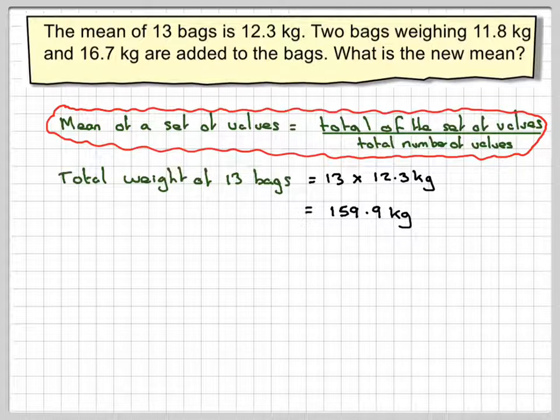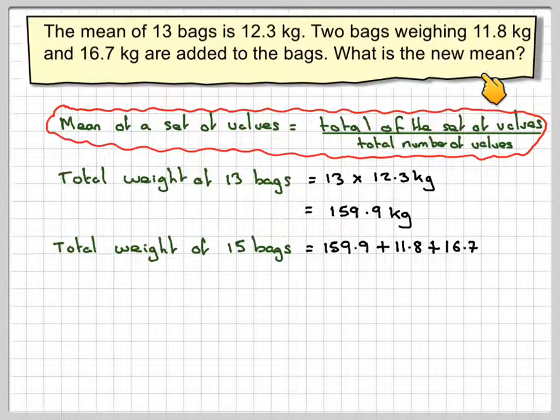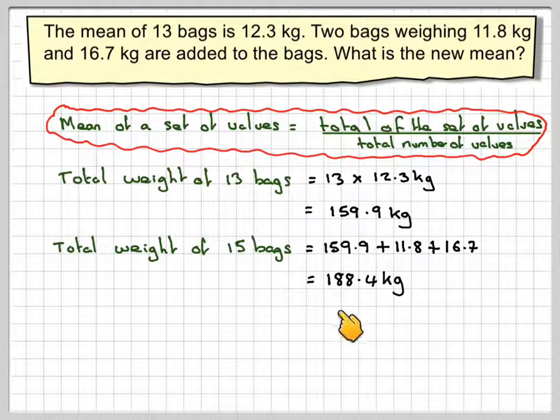Then I'm going to add in two more weights. So I'm going to add to the 159.9, 11.8 and 16.7. The total weight of the 15 bags will be 188.4 kilograms.